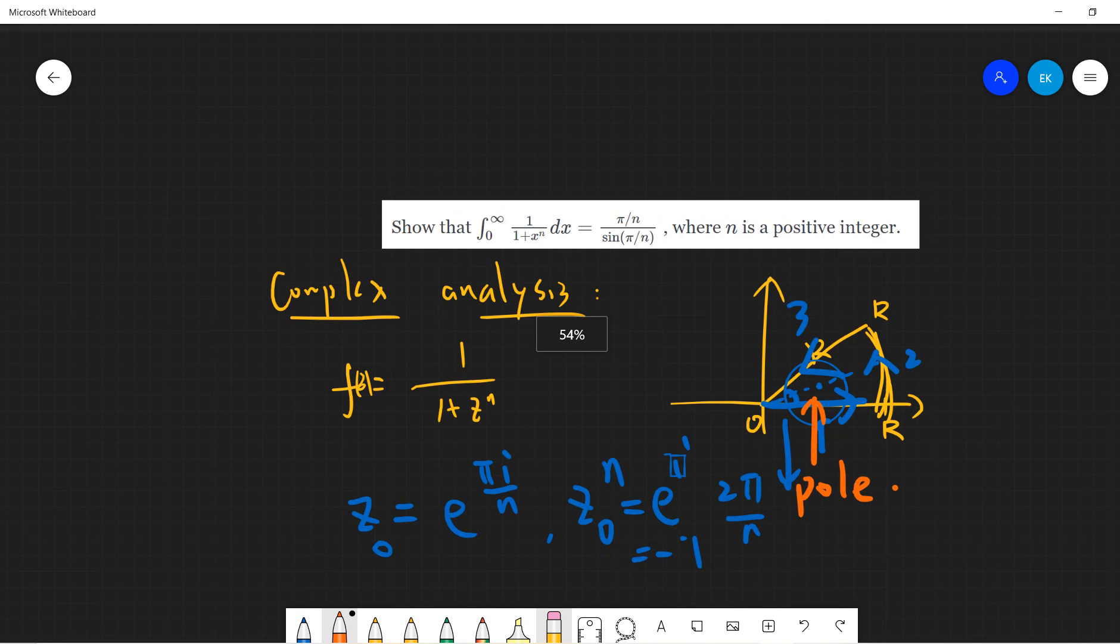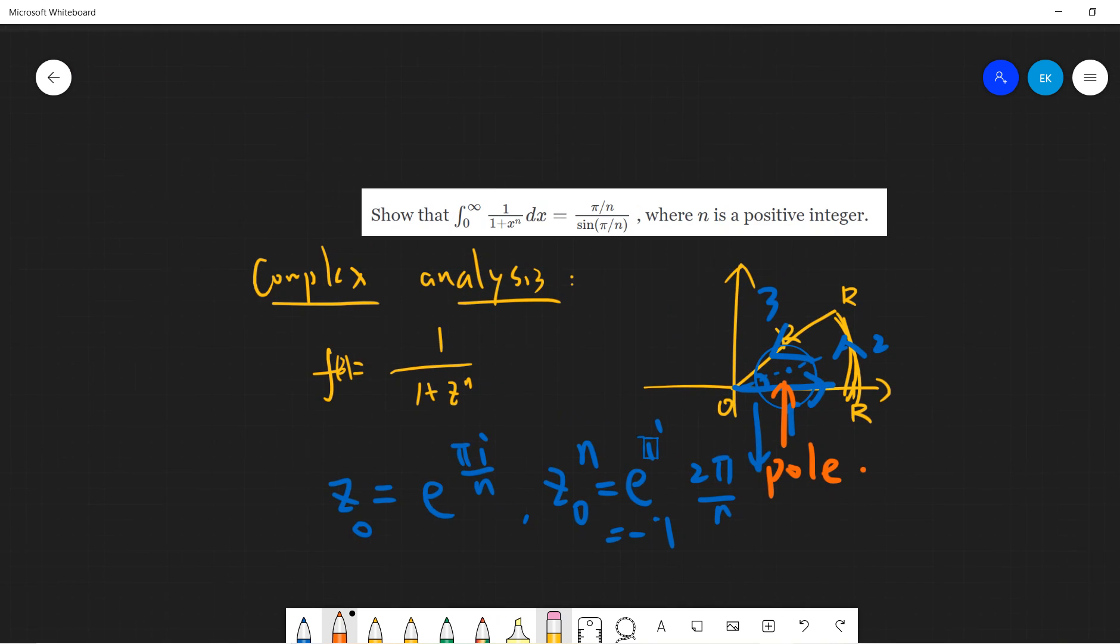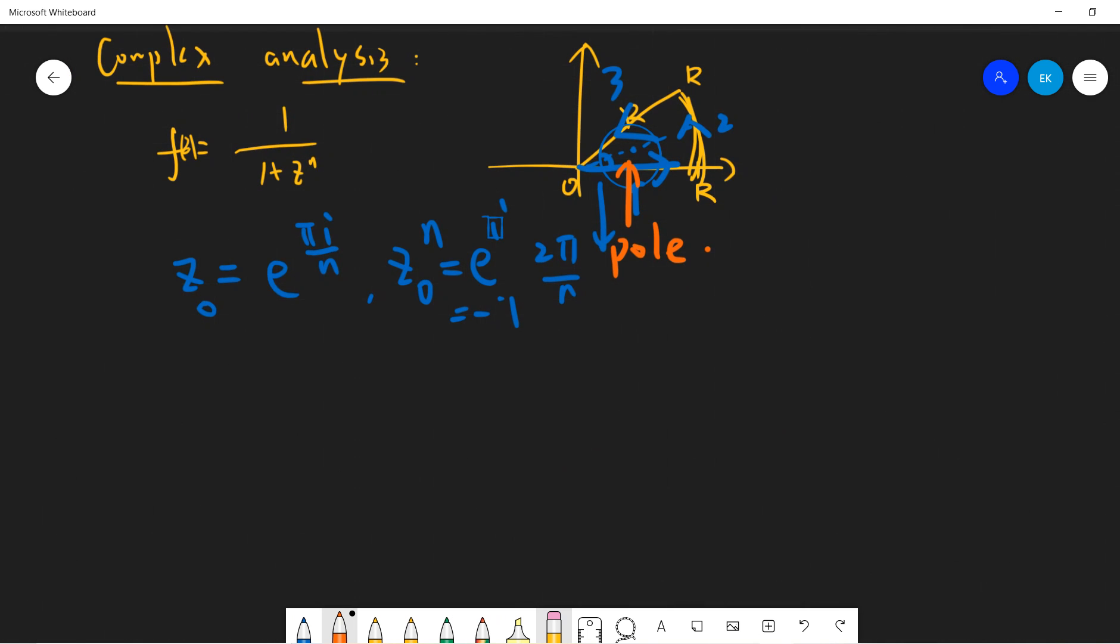Let's see what we will get. So the first section, the first one is 0 to r. So let's take r to be infinity. So you get 0 to infinity, f of x dx, which is what we want.